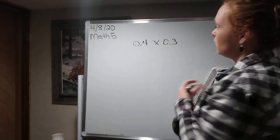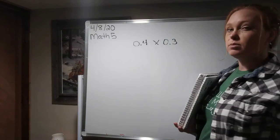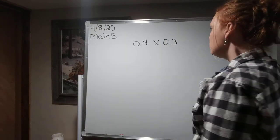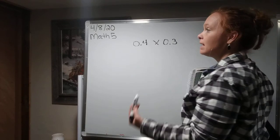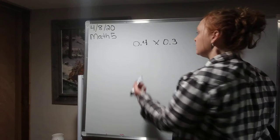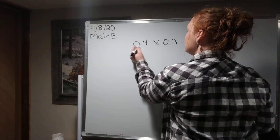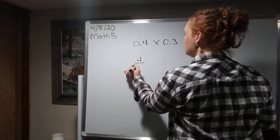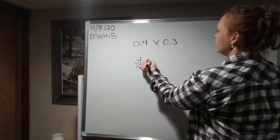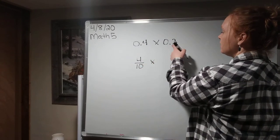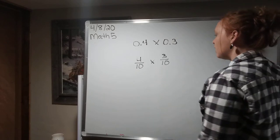What they're wanting you to think about is they're wanting you to think about these in terms of fractions because you're really good at multiplying fractions now. So when I read this number properly, 0 and 4 tenths, because it's in the tenths place, I can hear a fraction, 4 tenths. This is the same thing as 4 tenths. And I'm going to bring down my multiplication sign. I'm going to say this one is the same as 3 tenths because I'm thinking about that place value.